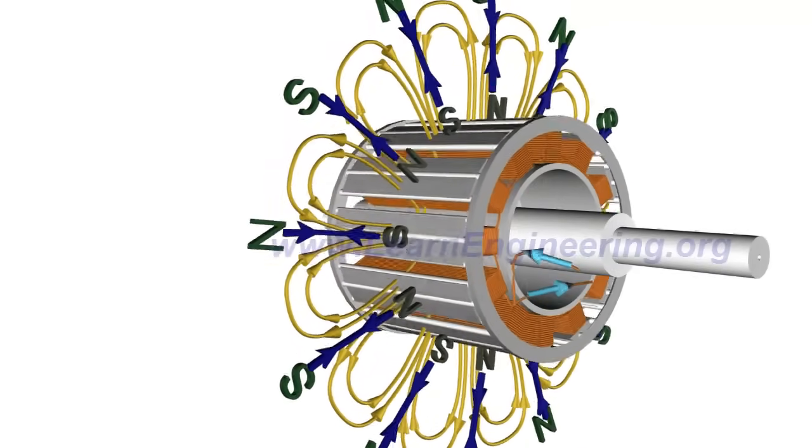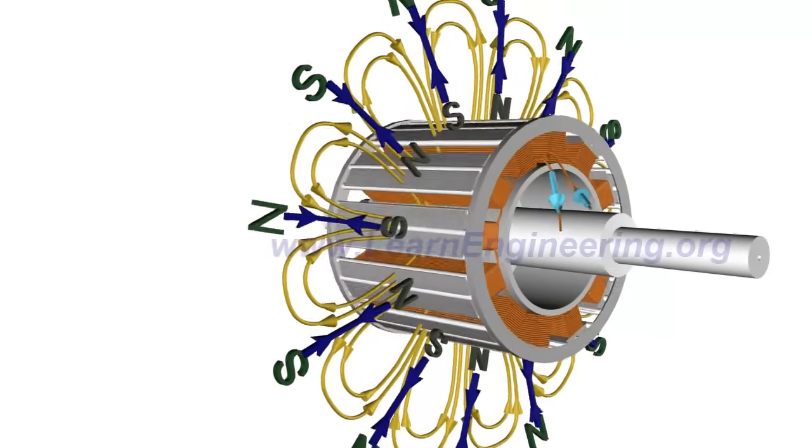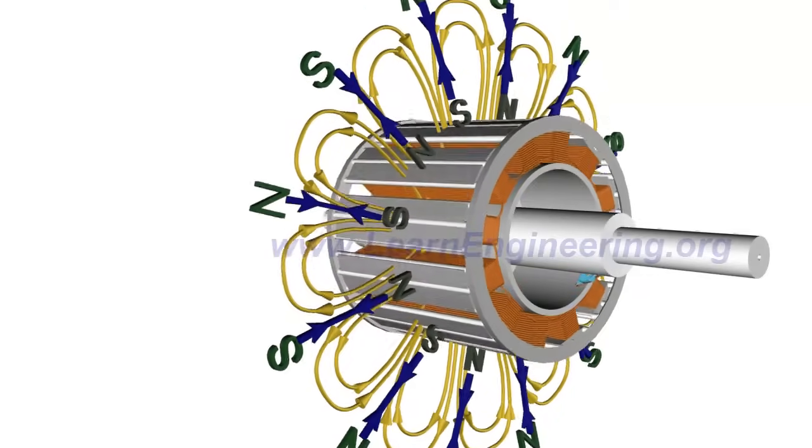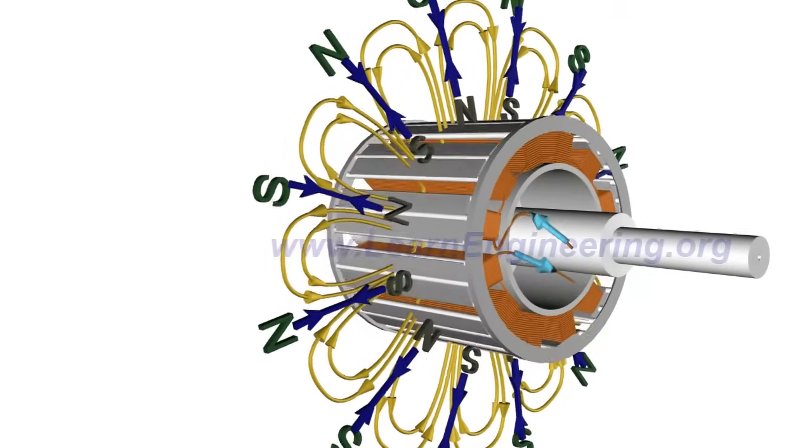When rotor rotates at synchronous speed, relative motion between squirrel cage and RMF is zero. This means zero current and force on squirrel cage bars, thus it will not affect synchronized operation of motor.